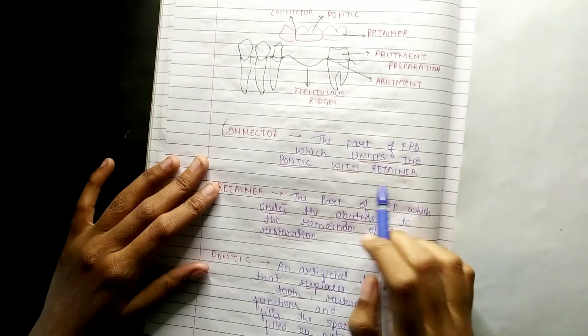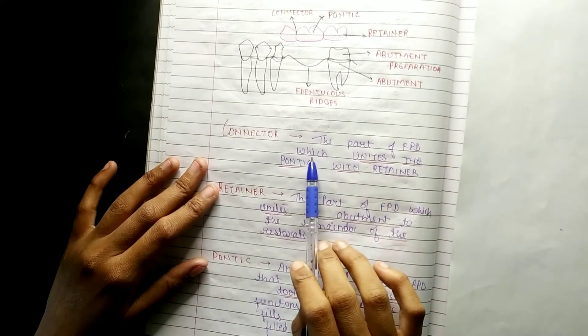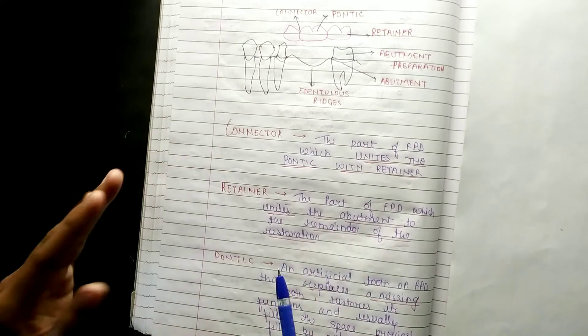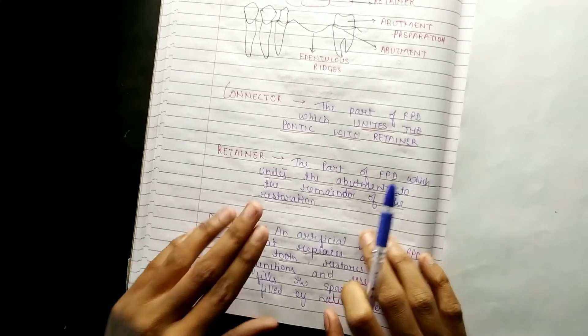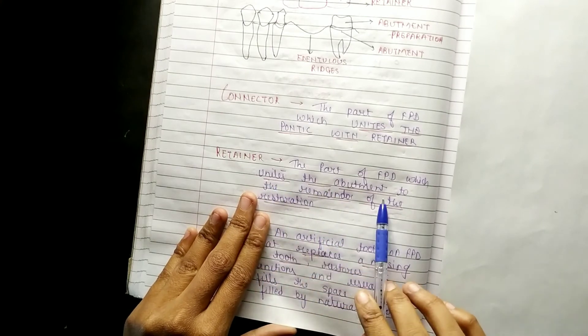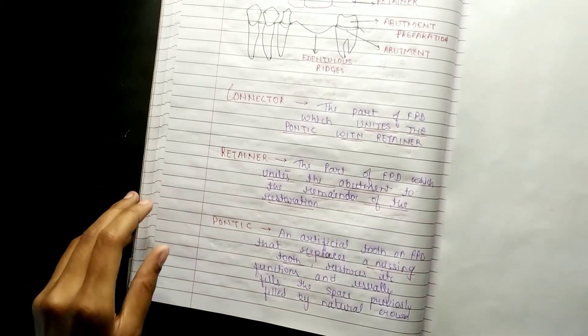Connector: the part of FPD which unites the pontic with retainer. Retainer: the part of FPD which unites the abutment to the remainder of the restoration.